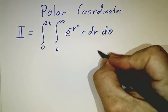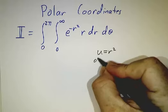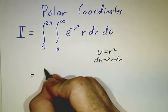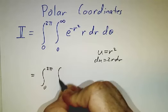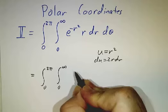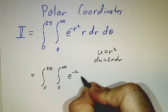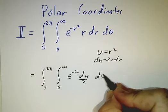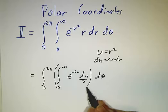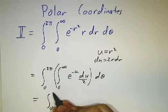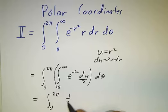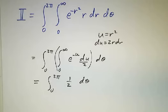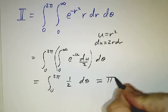And we just do a u-substitution: u=r², so du=2r dr, and this becomes the integral from 0 to 2π of the integral as u goes from 0 to ∞ of e^(-u) du/2 dθ. And that's an integral we know how to do. That just gives us a half. And the integral from 0 to 2π of 1/2 is just π.